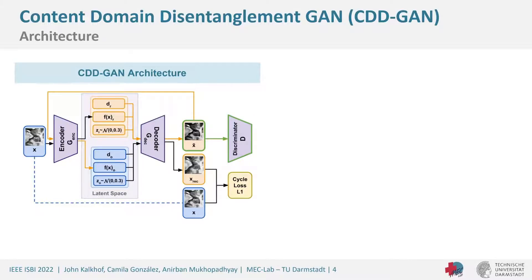The discriminator must decide whether the image is fake or real, identify the image X, and determine the input domain — where the generator tries to convince the discriminator of the domain set in the latent space DR. After training, we set DR to the training domain to transform any input image into the training domain. We also add a cycle consistency loss: X-bar is fed back into the encoder and through the generator again with the input domain set as the target domain, recreating X via L1 loss to ensure the generator stores enough information in the latent space.